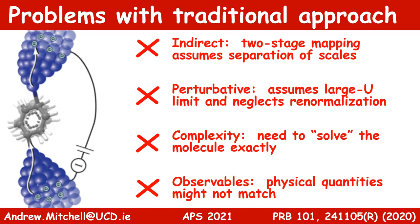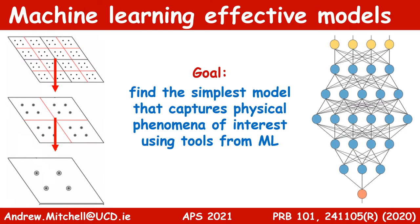The problem with this approach is that it is indirect. We have to assume a separation of scales in the two-stage mapping, and this may not be physically justified. The method is also perturbative — effective parameters, and hence predicted transport properties, are only accurate in the limit of strong electron interactions. We'll see later that this is actually a very severe approximation for real systems. Furthermore, one still has to completely solve the molecule to perform the mapping, which is only possible in the simplest cases. And finally, observables in the effective model are not actually guaranteed to match, as we'll see.